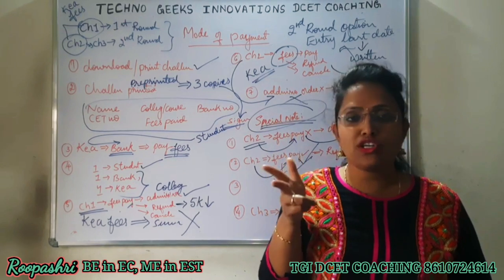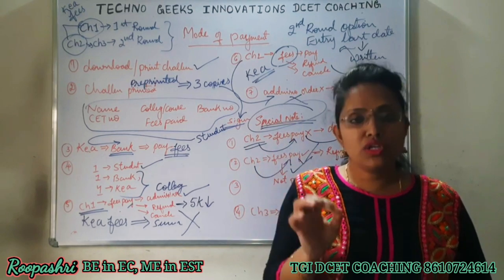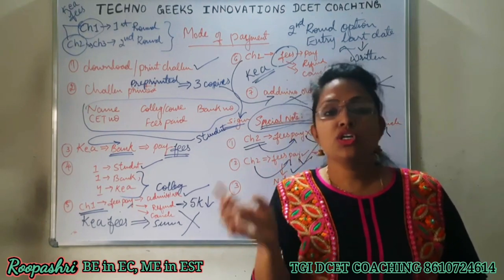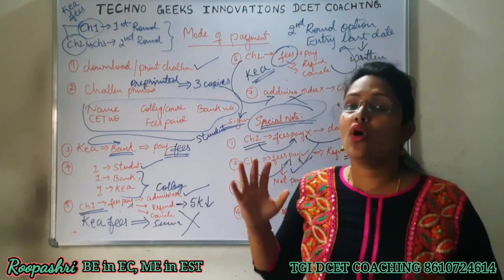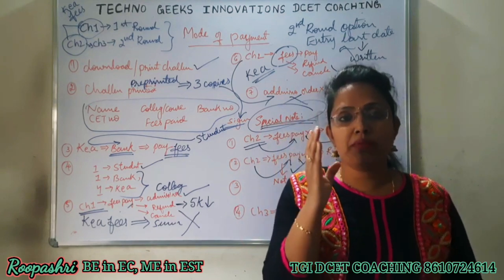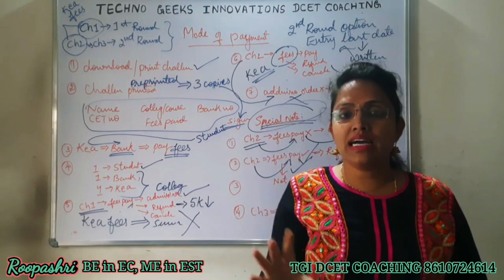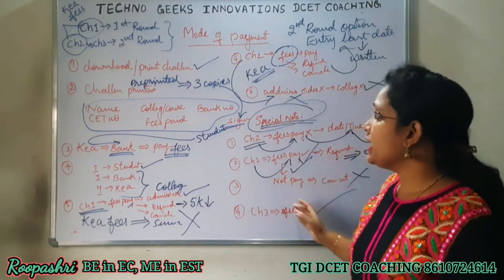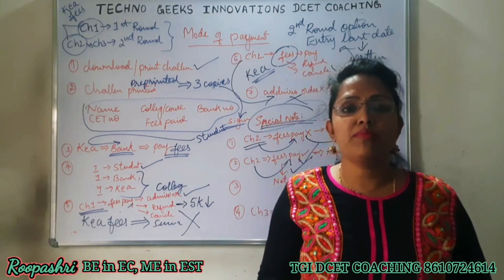So first round result - this video was made before the result was announced, students. After the first round result is announced, TGI channel will have videos on impact of choice 1, impact of choice 2, impact of choice 3, after choice 1, after choice 2, after choice 3 - watch those videos. Also a video on which is best - choice 1 or choice 2, choice 2 or choice 3. Please wait for those videos before pressing choices. Also, don't use mobiles to make choices - by mistake some wrong choice may get clicked.